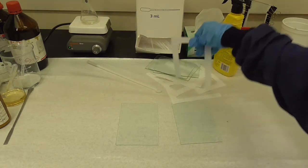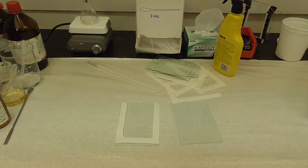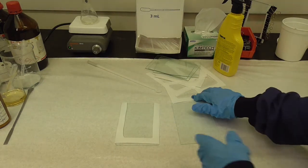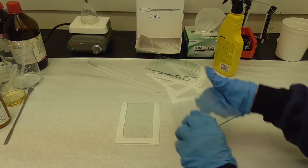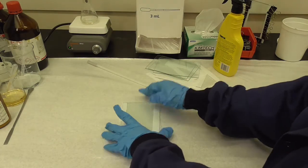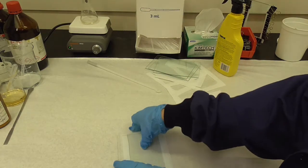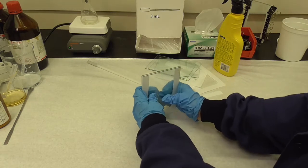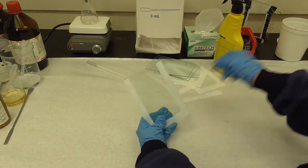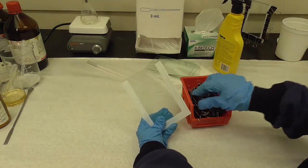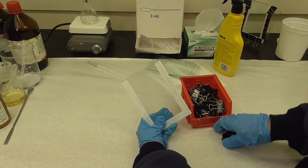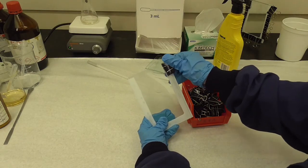Now we're going to put a piece of Teflon here between the two pieces of glass. It makes a spacer and then we use the clamps to clamp around the perimeter.